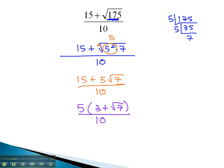And now we are allowed to reduce the fraction by dividing out common factors. 5 and 10 are both divisible by 5, leaving a 2 behind in the denominator. For my final answer, we have 3 plus the square root of 7 over 2.